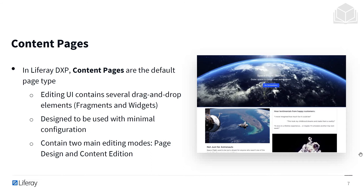Content pages are the default page type in DXP 7.3. These pages are highly customizable, and out of the box we have a lot of tools to help turn them into whatever you need. The editing UI contains several drag-and-drop elements, broken up into fragments and widgets. It's designed to be used with minimal configuration. When building out these pages, there are two main editing modes: page design, where we're creating the structure of the pages and looking at the broad strokes of top-level page creation, and content edition, where we're actually going in and customizing the content that will live on that page.